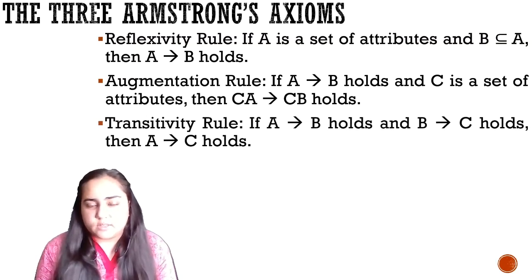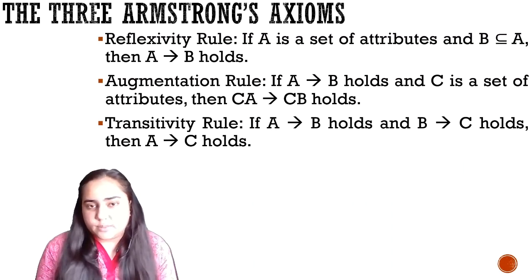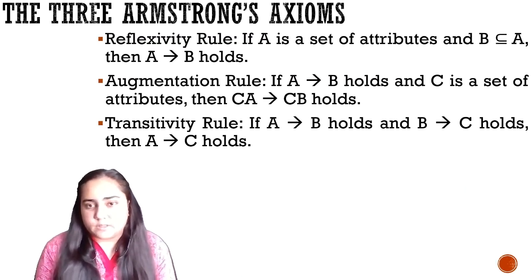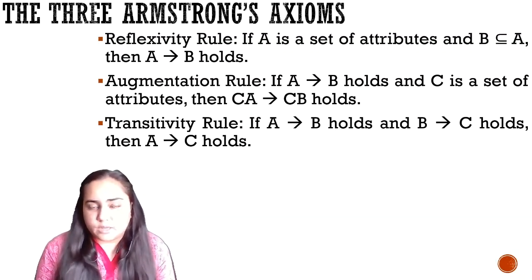The third Armstrong axiom is the transitivity rule, which says that if A determines B holds and B determines C holds, then A determines C holds. Notice that in A determines B the right side is B, and in B determines C the left side is B — both dependencies have B in common on opposite sides, so you can conclude A determines C. These are the three basic Armstrong's axioms.